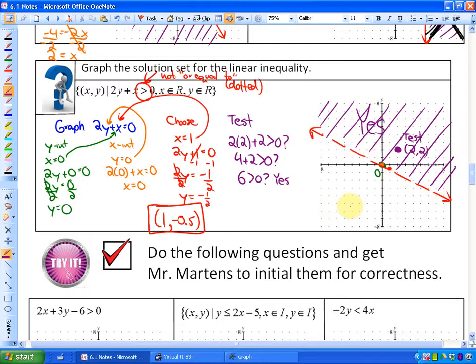And finally with the restrictions, we've looked at what i means. i is integers, w is whole numbers, and r here means real numbers, which is essentially all numbers. So we don't have to worry about integers, negatives, positives. All of the points in this region satisfy the inequality where 2y plus x is greater than 0.